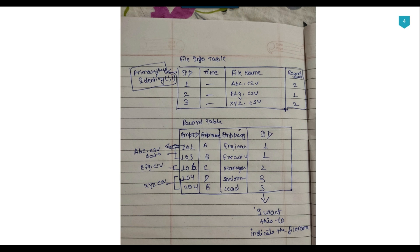If we want the file ID present in the original table as well, we need to insert a record into the file info table before loading the actual data. As soon as the record is inserted, the ID will be generated, and we can use that ID when inserting into the original table. The challenge is that the record count won't be available at that moment, and we also want to update the time after loading the data.